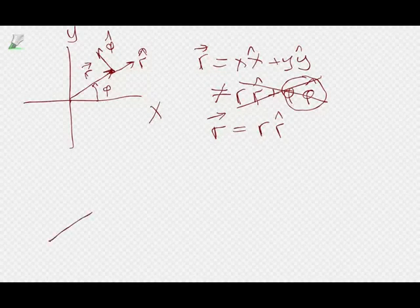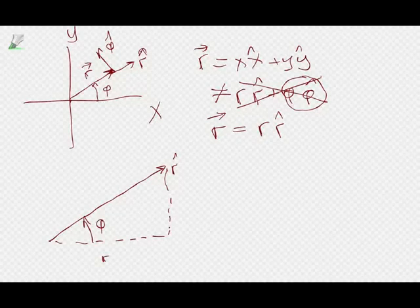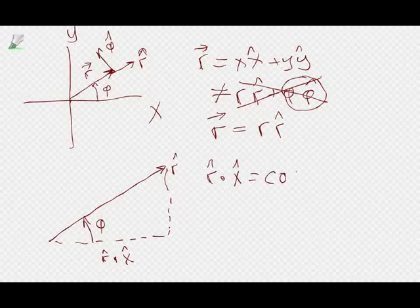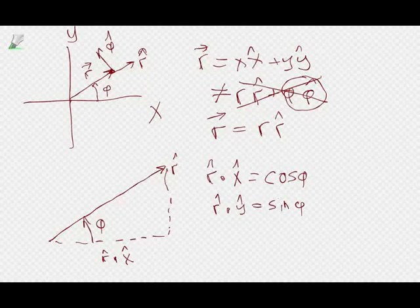Let's zoom in on r-hat and draw its x and y components. The angle here is phi. I'm going to use the dot product: r-hat dot x-hat is the x-component of r-hat — anything dotted with x-hat gives that thing's x-component. So r-hat dot x-hat equals cosine phi. And the y-component of r-hat is just sine phi, because the length of r-hat is 1.